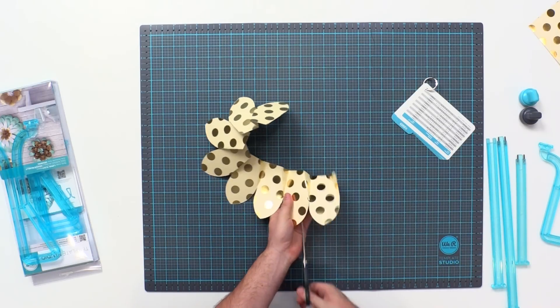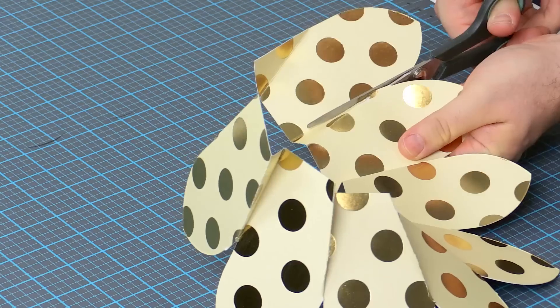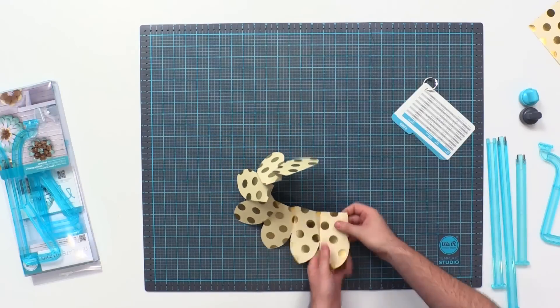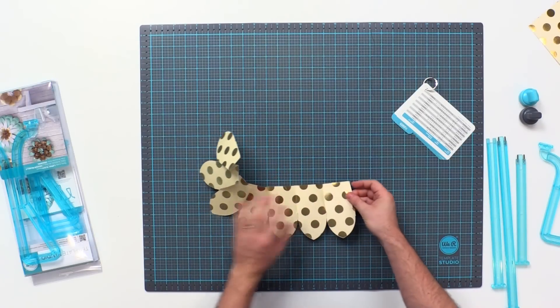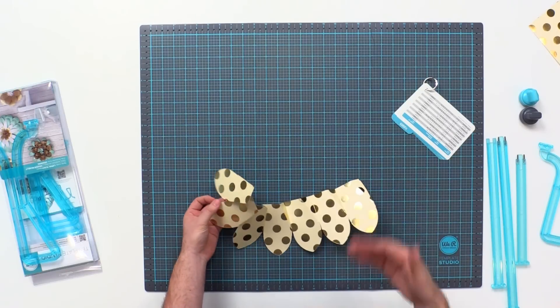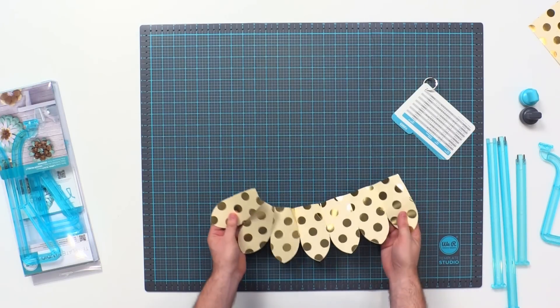And to cut it down, you're just going to cut along the vertical piece of the vertical score line. You can cut one, two, three petals off. The more petals you cut off, the more dimensional it'll be.